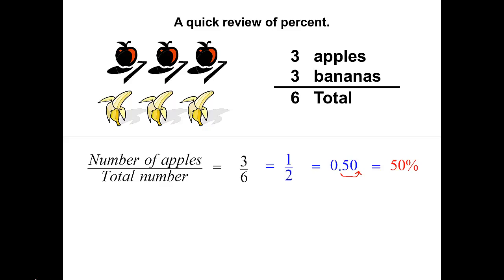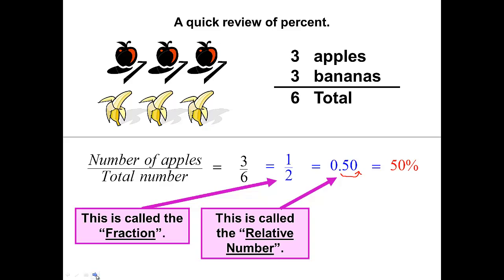Now for some terminology. That, of course, is your fraction. It's always been your fraction. It still is your fraction. But notice we use the reduced form of the fraction. The decimal number is called the relative number because it tells us and relates the number of apples to the total number of fruits. That's the new terminology. And of course, as always, the last number is the percent. It's the percent of fruit that is an apple.